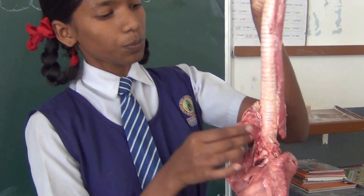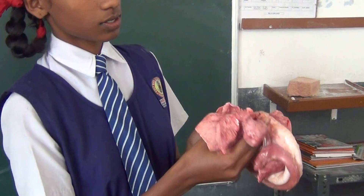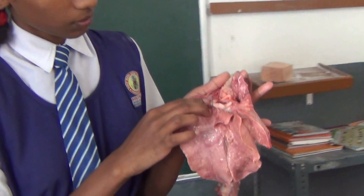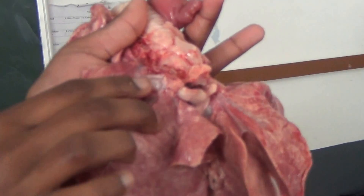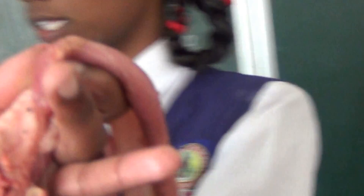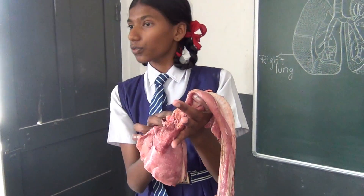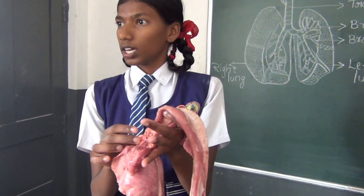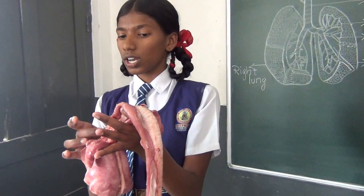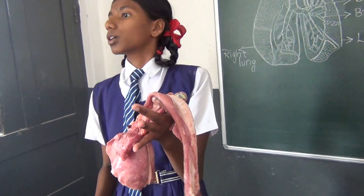Now the next part — we'll go to bronchi. Bronchi, we can see here. This is singularly called a bronchus. The trachea divides into two tubes called bronchi. Each bronchus enters into the lungs and again divides into many branches called bronchioles.